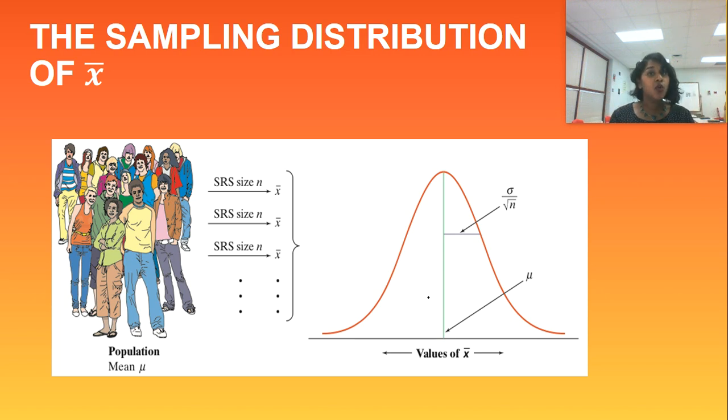So your standard deviation can be calculated by taking standard deviation of your population divided by the square root of your sample size. A lot easier formulas to use than the chaotic standard deviation formulas and such and so forth.